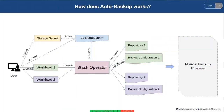Let's see how auto backup works in Stash. We have a custom resource named Backup Blueprint in Stash. It specifies which type of things to back up and the template for repositories and backup configurations. A user has to create a Backup Blueprint first, specifying the template properly.